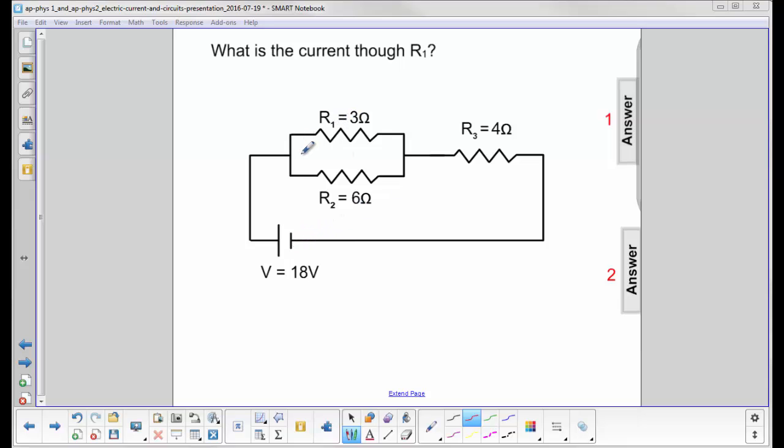We're going to do that by replacing this parallel configuration with its equivalent resistance. And then we have two resistors in parallel. We can then find that equivalent resistance and finally the current.